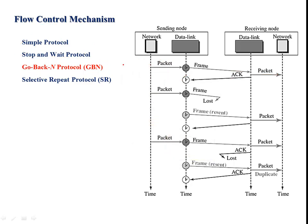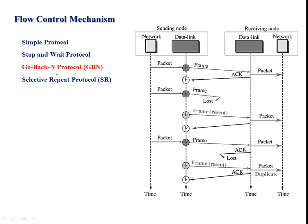To increase the efficiency, we have the pipelining concept. In pipelining, rather than sending only one packet at a time and waiting for the acknowledgement, it subsequently sends other packets as well, maintaining a sliding window. The window slides to the next subsequent data. In Go-Back-N and selective repeat protocols, we will look into the sender window size and receiver window size and how the flow is actually controlled.